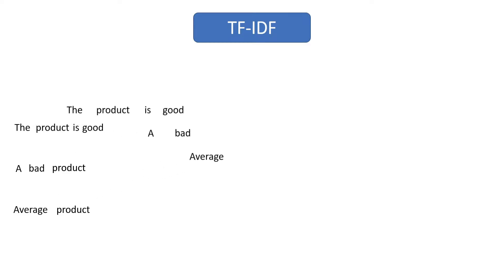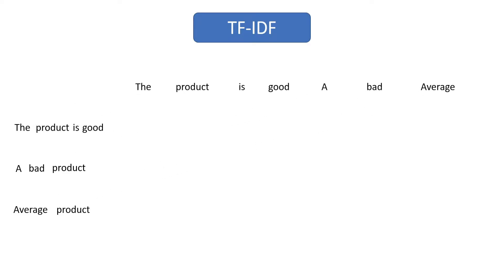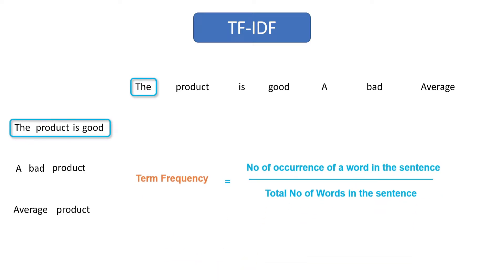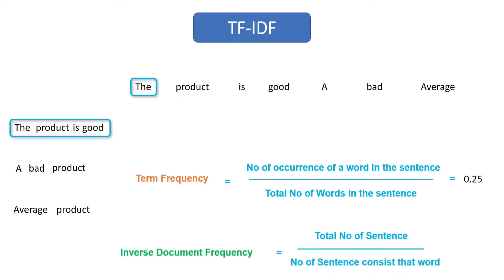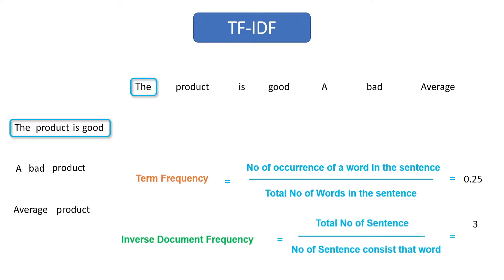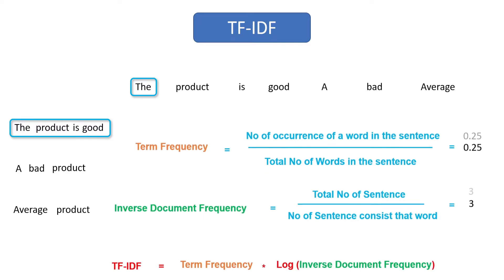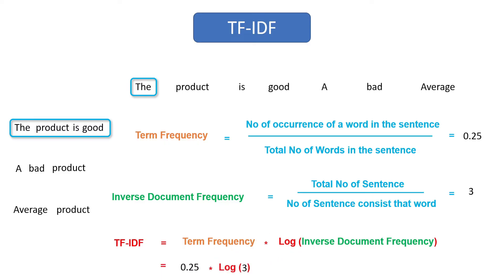The first step is to take all the unique words, and the second step is to calculate term frequency of each word with respect to all sentences. Let's take the first word 'the' and calculate term frequency with respect to the first sentence. The number of occurrences of 'the' is 1 and the total number of words in the first sentence is 4, so the term frequency value will be 0.25. Now we calculate inverse document frequency — total sentences are 3 and the number containing 'the' is 1, so IDF is 3. The TF-IDF score will be 0.11.